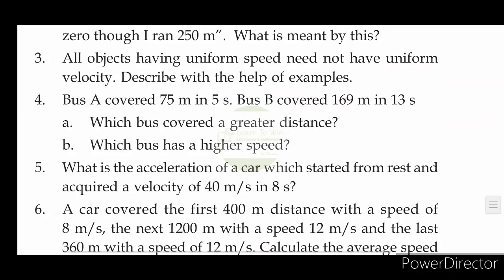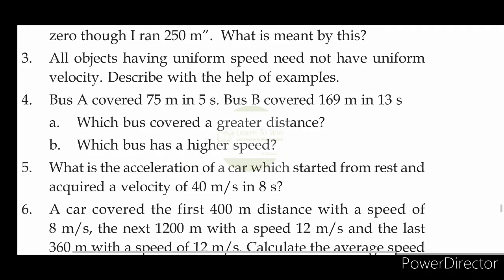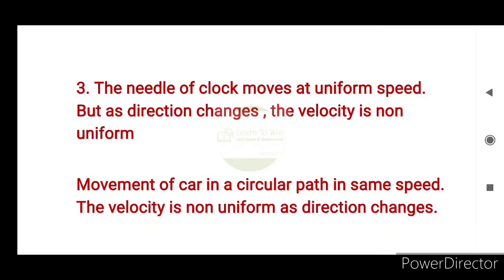All objects having uniform speed need not have uniform velocity. One example is the needle of the clock — the needle of the clock moves at uniform speed, but as the direction changes, the velocity is non-uniform.